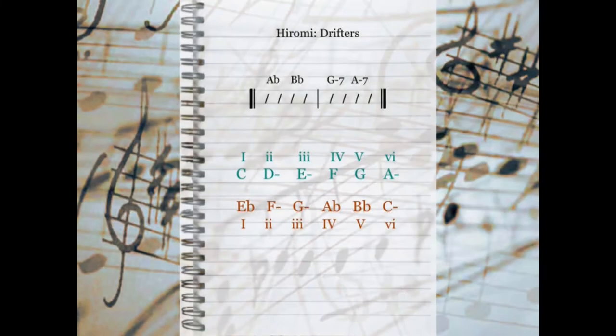I'm finding the Hiromi song 'Drifters' to be an interesting case. The progression is A-flat, B-flat, G-minor 7, and A-minor 7. Again, C is the umbrella key and E-flat is the switch key. A-flat and B-flat are respectively 4 and 5 of E-flat major; G-minor 7 is the 3 chord of E-flat major; and A-minor 7 is the 6 of C. I love the fact that the C root chord is never stated — instead its relative minor, A-minor, is stated. This effect works really nicely.